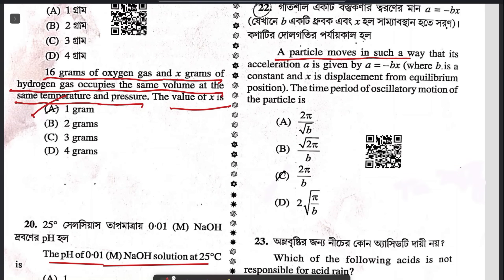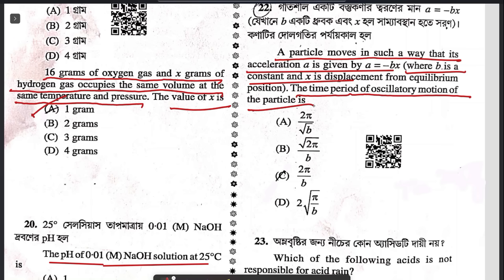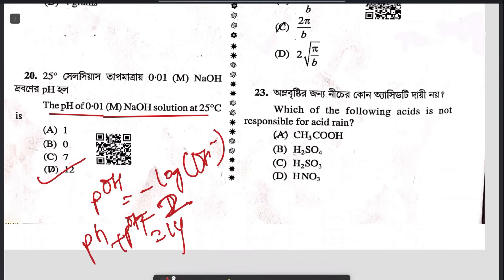Question 22: a particle moves such that its acceleration A = -BX, where B is a constant and X is displacement from equilibrium. The time period of oscillatory motion will be 2π/√B.